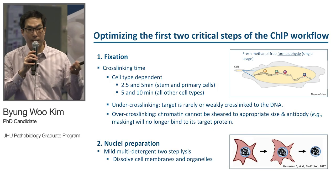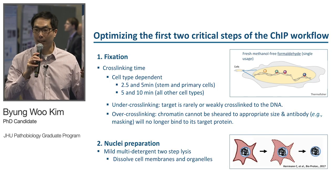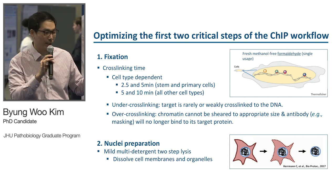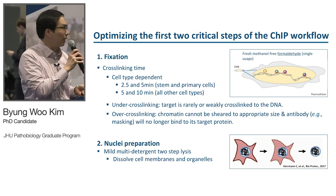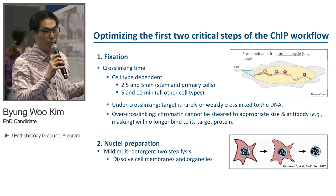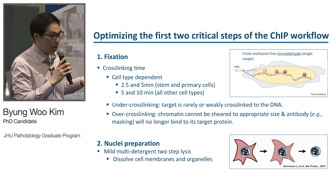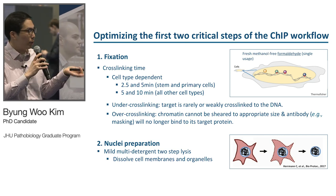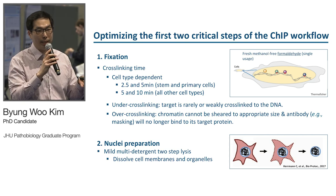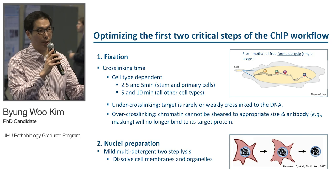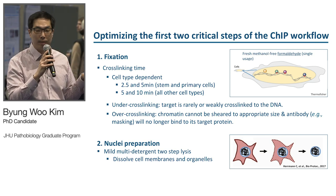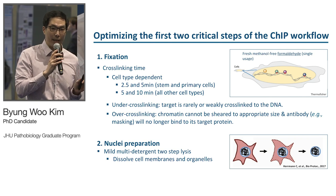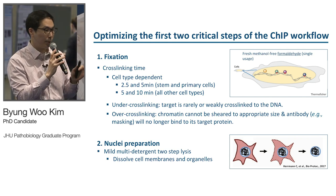I'll go over each step and highlight important points needed for a successful result. The first two steps are fixation and nuclear preparation. For fixation, cross-linking time determination is very important. We usually recommend 2.5 and 5 minutes for primary or stem cells, and 5 and 10 minutes for all other cell types. But again, this is highly cell-type dependent, so it has to be determined empirically.